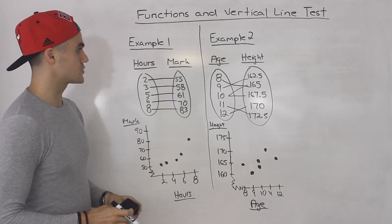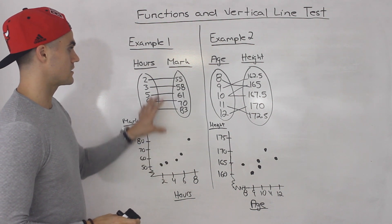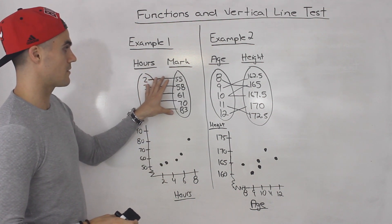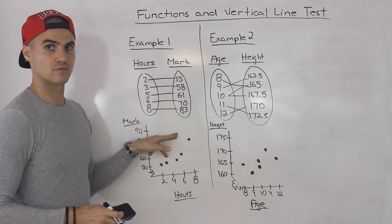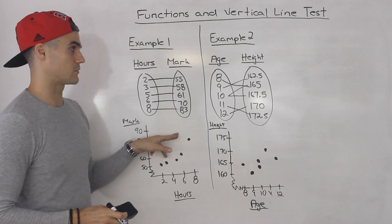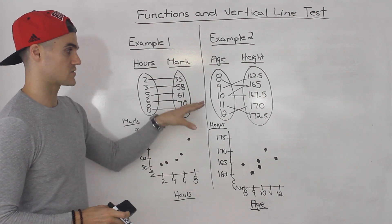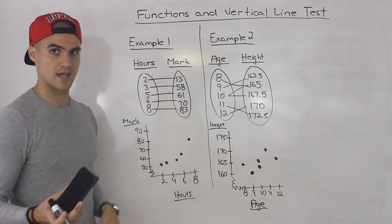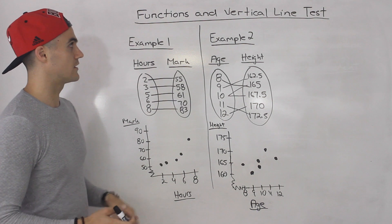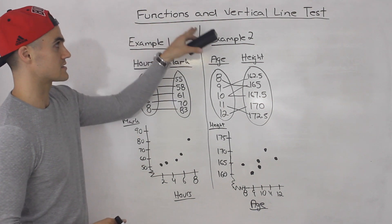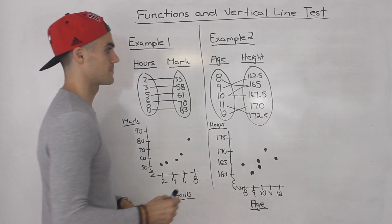For those two examples I drew out the mapping diagram for both and the graph for both. I'm going to use both of these ways to represent a relation to better explain the concepts of functions and the vertical line test.